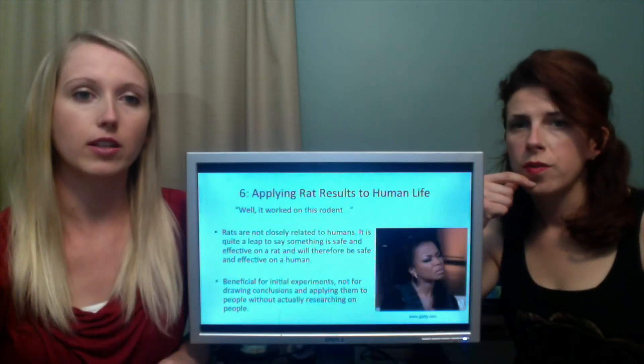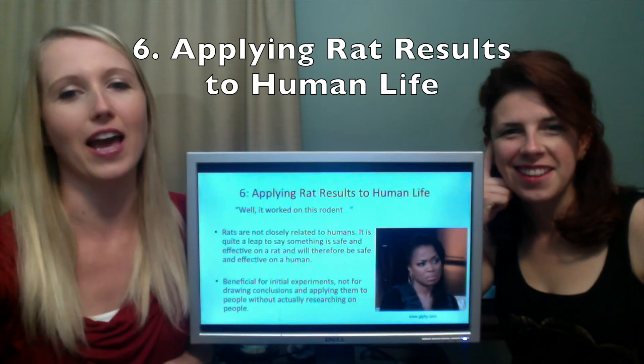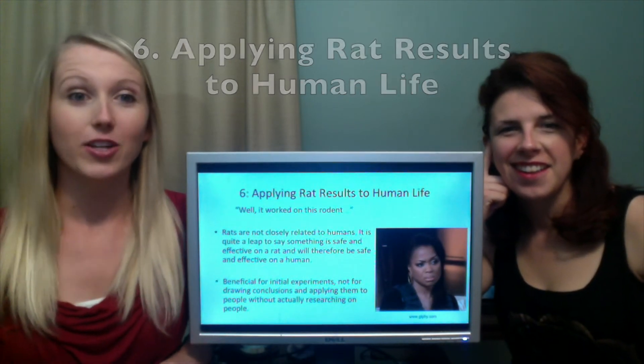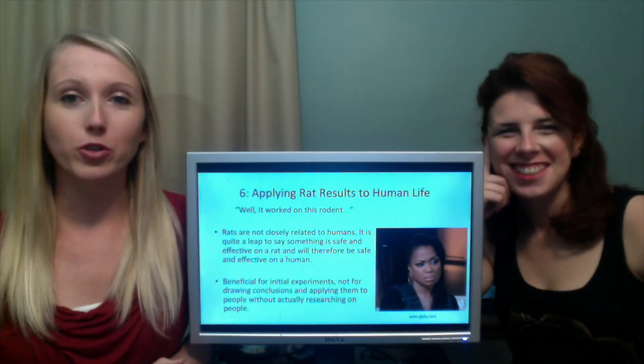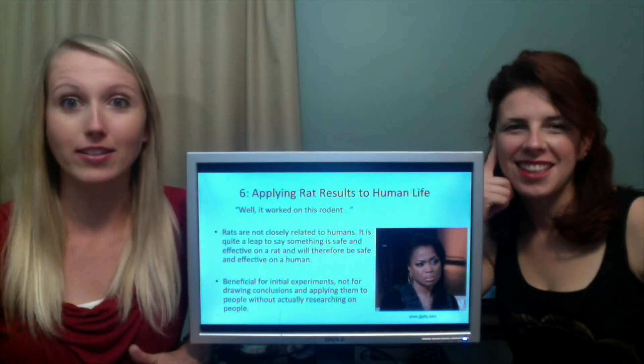Number six, applying rat results to human life. I hate this. So how many times are you going to say in your life, well, it worked on the rodent, so yeah, it's fine. I'll try it. That doesn't even make sense. But researchers use this. Rats are so different from humans. You can't take a drug or makeup or an intervention, put it on a rat and it works out, and then say, okay, let's give it to people. That doesn't always work.